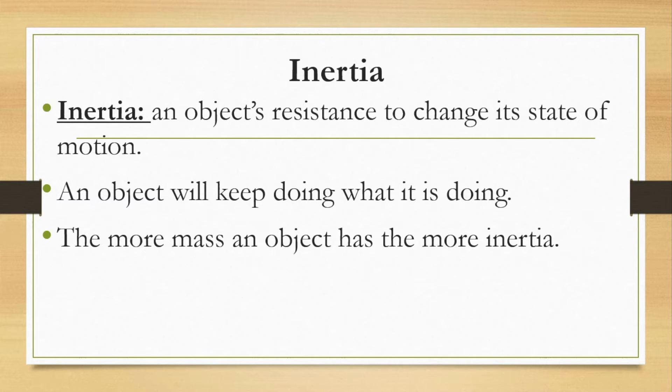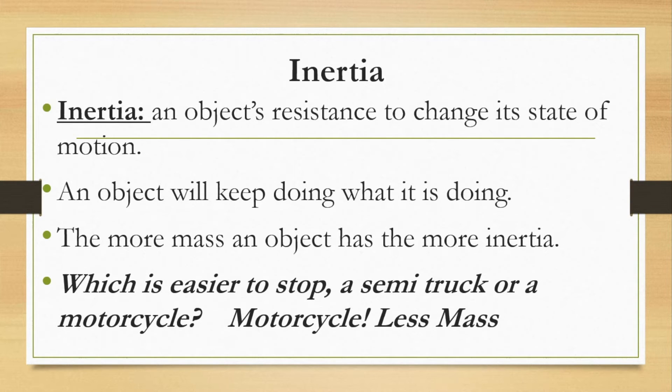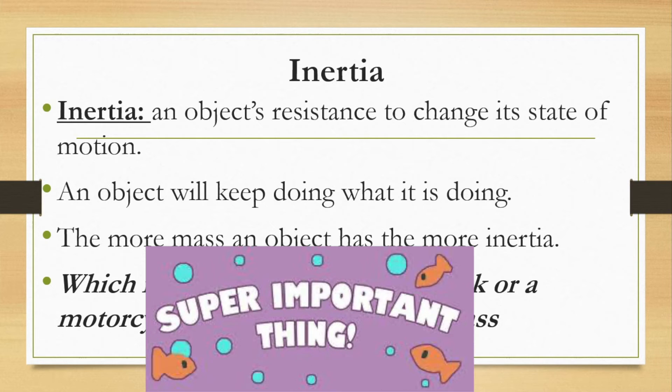Think about your house. Your house is very heavy. If you tried to push your house, it would not move. But think about a ball. If you were to push a ball, it would easily move. You could easily kick a ball left to right. If you try kicking your house, your house would not move left to right. So which do you think is easier to stop? A semi truck or a motorcycle? Well it's obviously the motorcycle because the motorcycle has less mass. So when we're talking about inertia, we're really just talking about mass. More mass, more inertia. Less mass, less inertia. Again, inertia is just saying an object's resistance to change its motion.